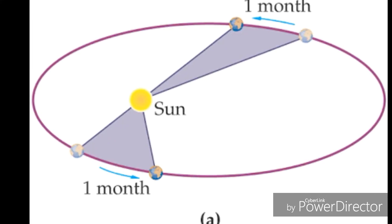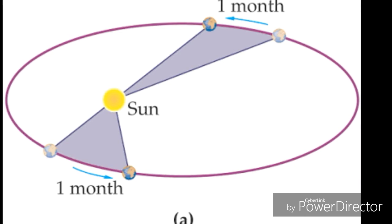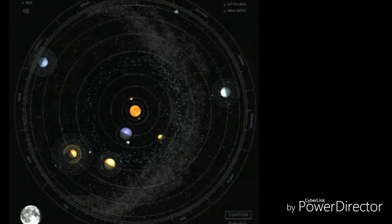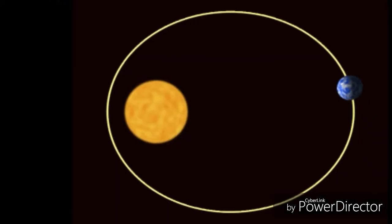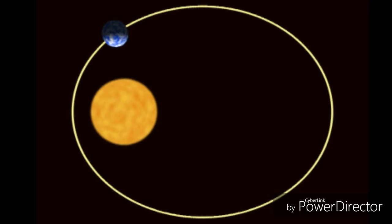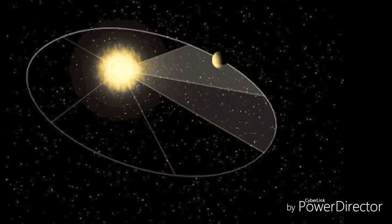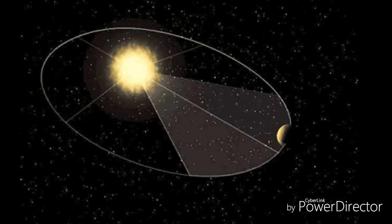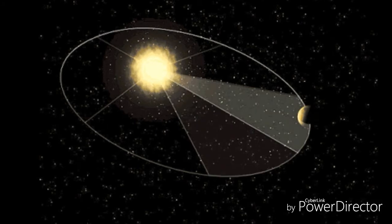Kepler's second law, also referred to as the law of equal areas, describes the speed at which any given planet will move while orbiting the sun. The speed at which any planet moves through space is constantly changing. A planet moves fastest when it is closest to the sun and slowest when it is furthest from the sun. Yet if an imaginary line were drawn from the center of the planet to the center of the sun, that line would sweep out the same area in equal periods of time.